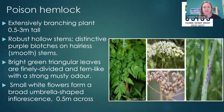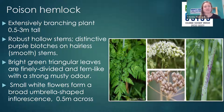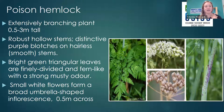Poison hemlock has really distinctive purple blotches on the stem. It's an extensively branching plant that grows 0.5 to 3 meters tall. It has robust hollow stems that are hairless and smooth with those purple swatches, and bright green triangular leaves that are finely divided and fern-like. It also has a really strong musty odor. It has the classic small white flowers with an umbrella-shaped inflorescence that can be half a meter wide.